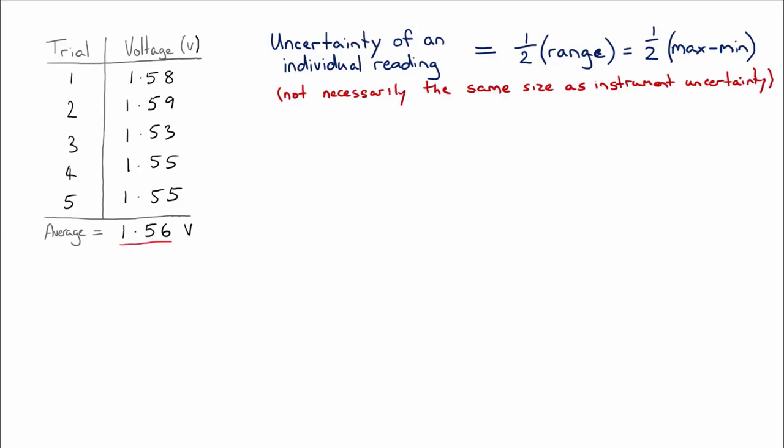If you go back and look at our data here, the range of the data is the maximum value, which is 1.59, minus the minimum value, which is 1.53, which gives us a range of 0.06 volts.